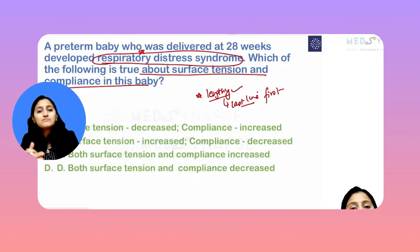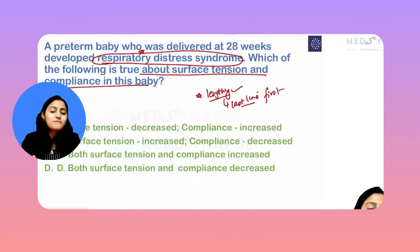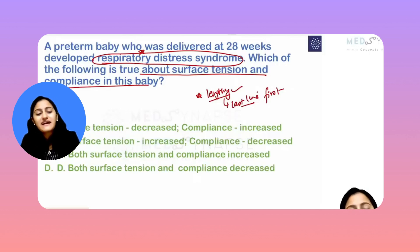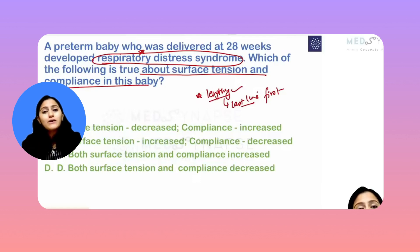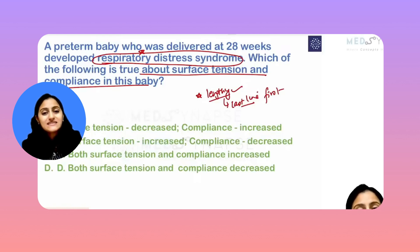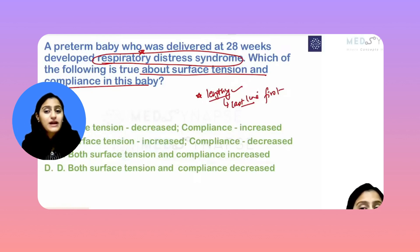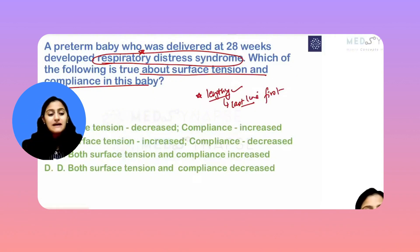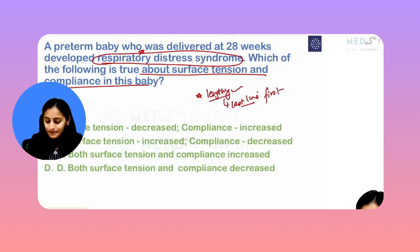In respiratory distress syndrome, there is no surfactant — it's a premature baby with no surfactant. So what happens? The lungs collapse. On X-ray you get bilateral whiteout lungs with air bronchogram sign. So with collapsed lungs, is the compliance less or more?